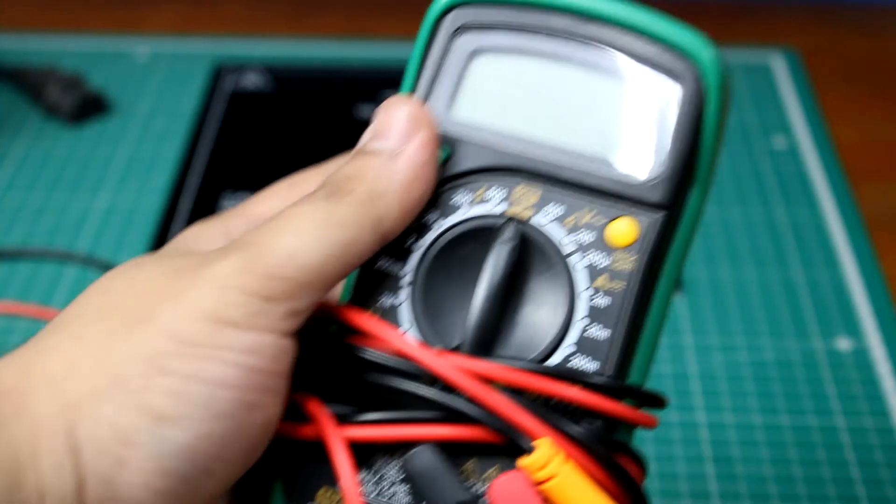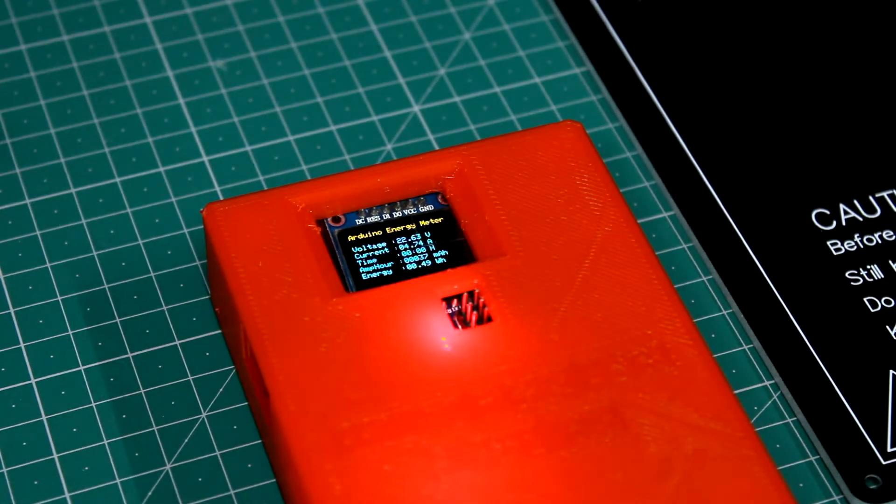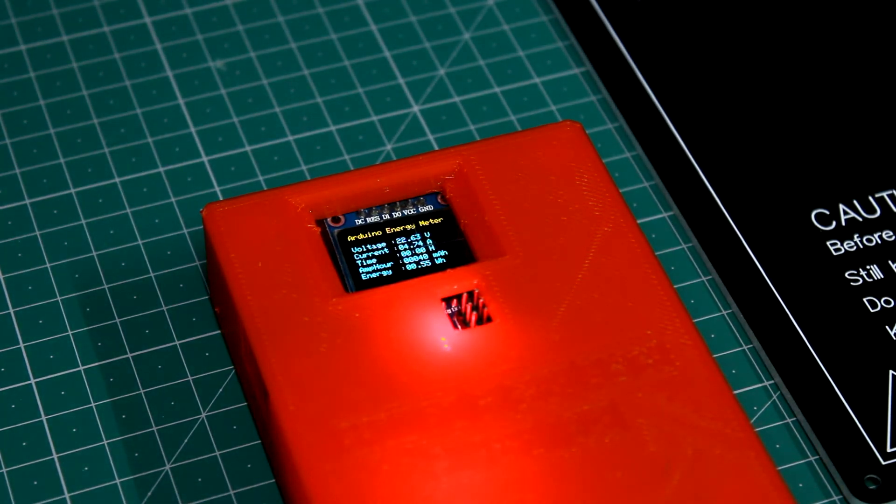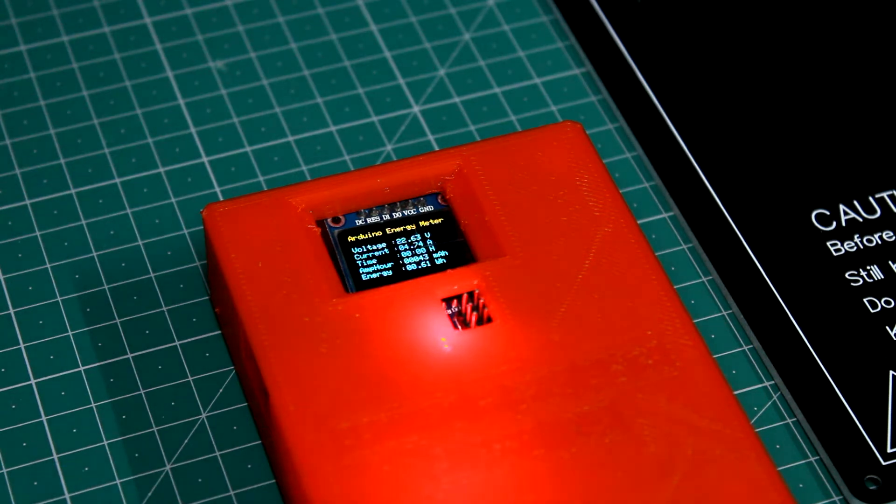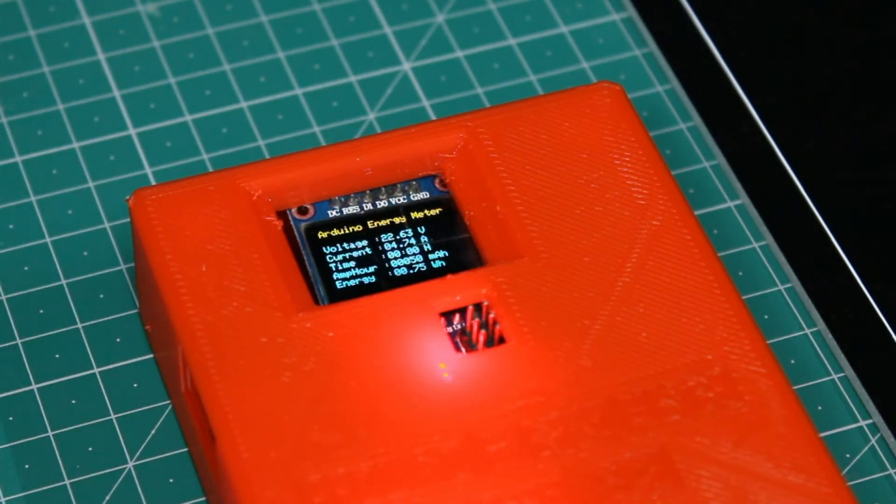Now you may be wondering why not use a multimeter for the same. A multimeter cannot read the current and voltage values simultaneously and cannot calculate the current and power consumption along with the time elapsed, which this device can.